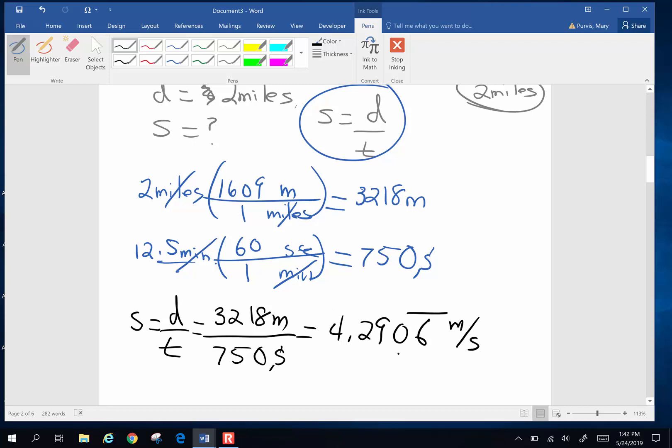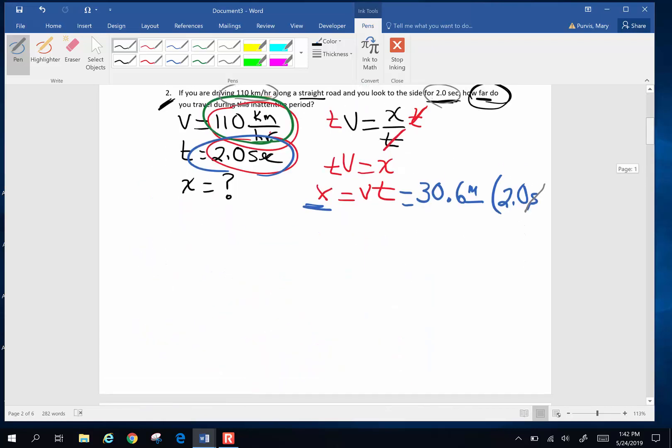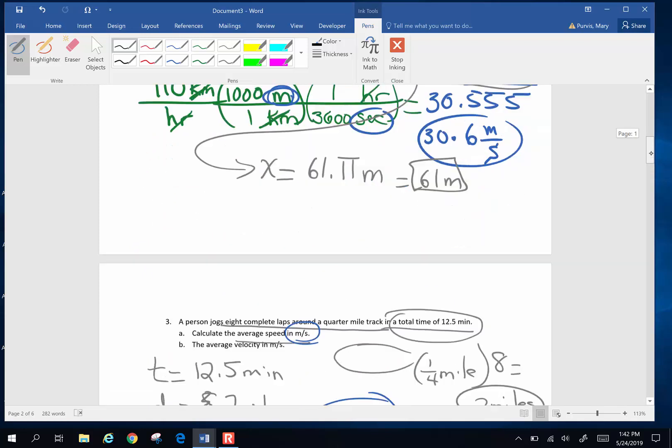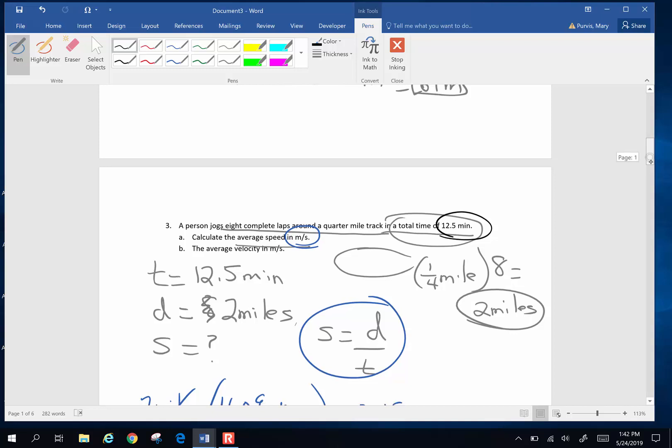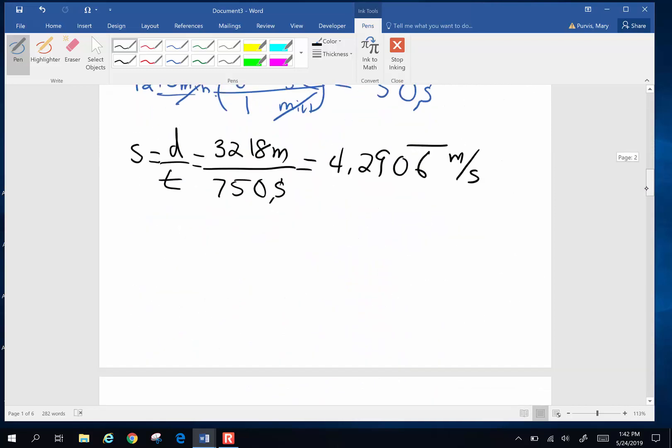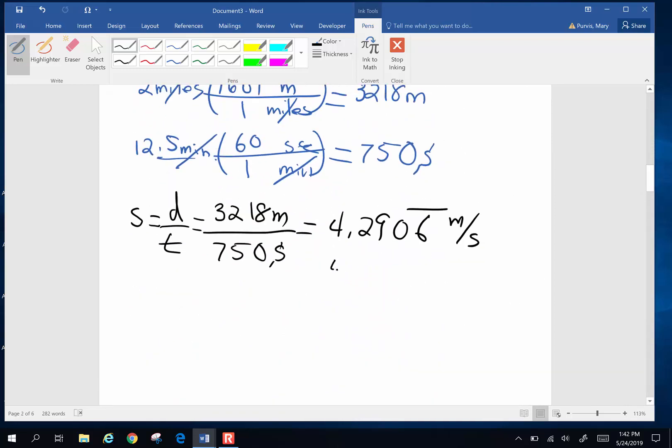When do you round off for sig figs? At the very, very end. Carry as many digits as you can throughout the entire process and round out at the end if you can. Now let's take a look. How many sig figs did I start with? I started out with 3 here and quarter mile track, we're going to pretend that's 3 because that's the number I was given. So if I round this off to 3 sig figs, it's going to be 4.29 meters per second. That's part A.